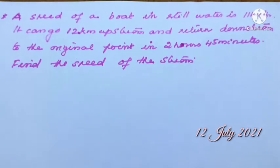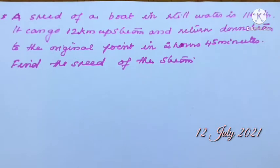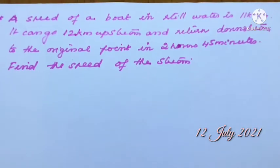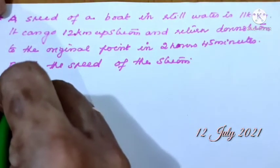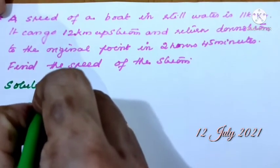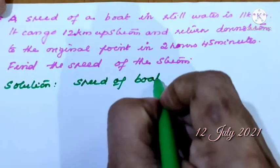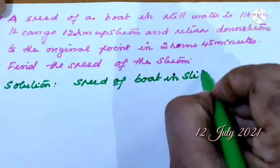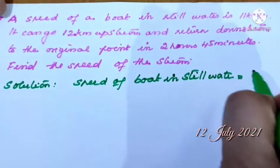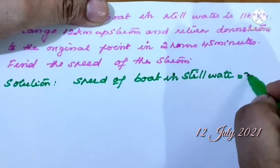Good morning children. Quadratic equation word problems — we are continuing. The speed of a boat in still water is 11 kilometers per hour. It can go 12 kilometers upstream and return downstream to the original point in 2 hours and 45 minutes. Find the speed of the stream. For such questions, we have to remember certain steps. Let the speed of the boat in still water be x kilometers per hour.